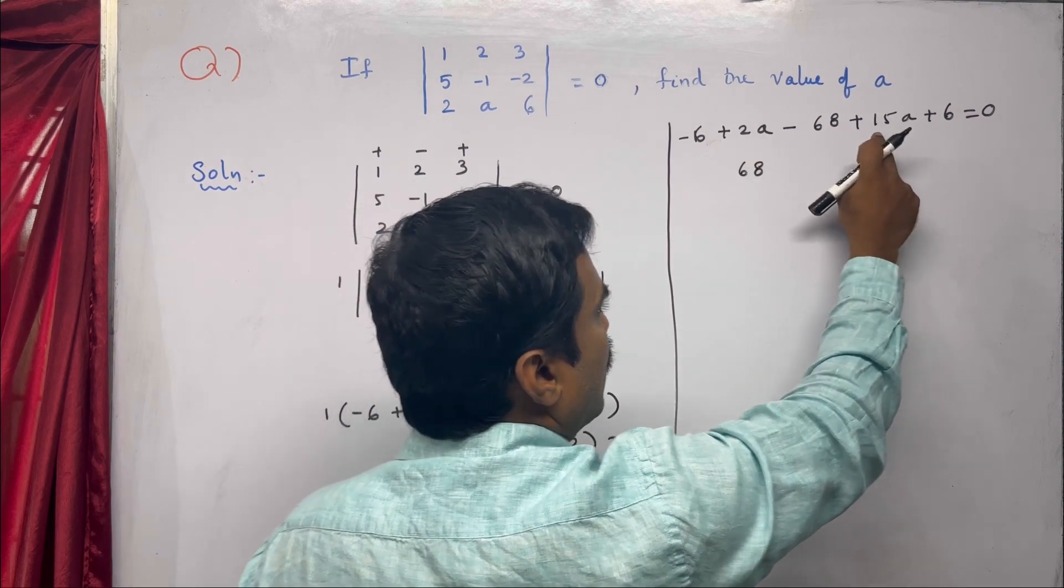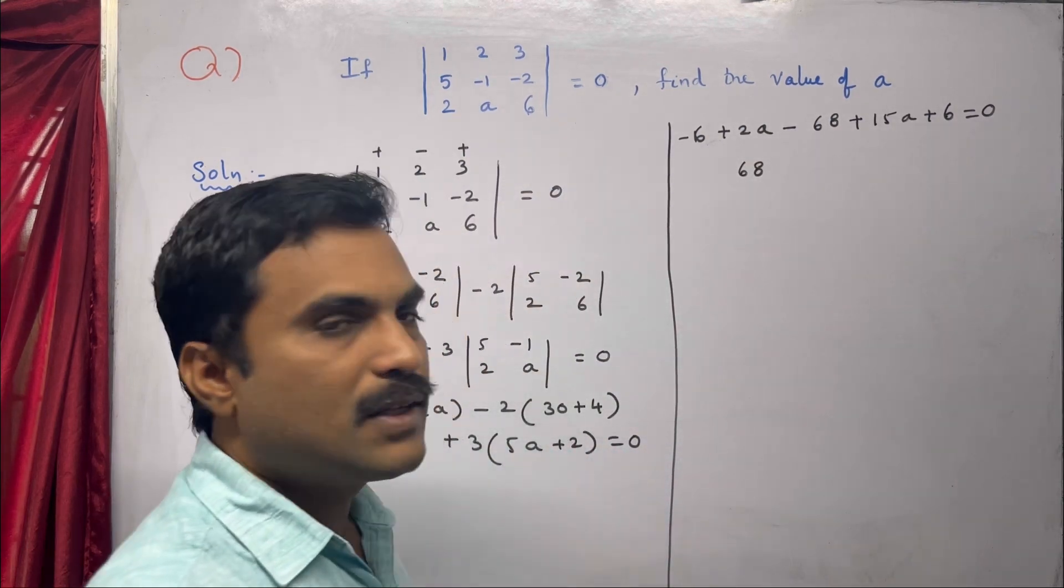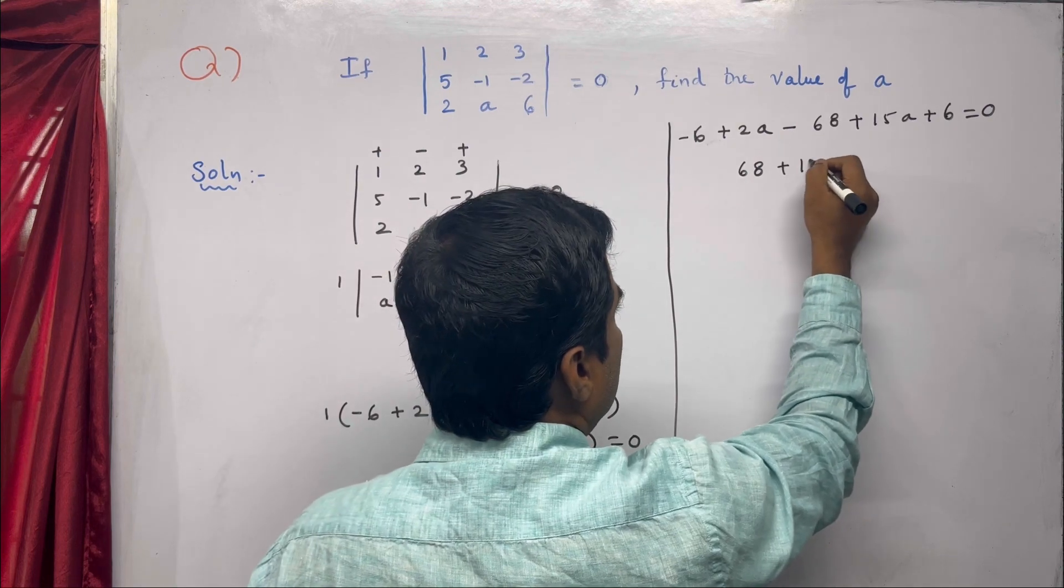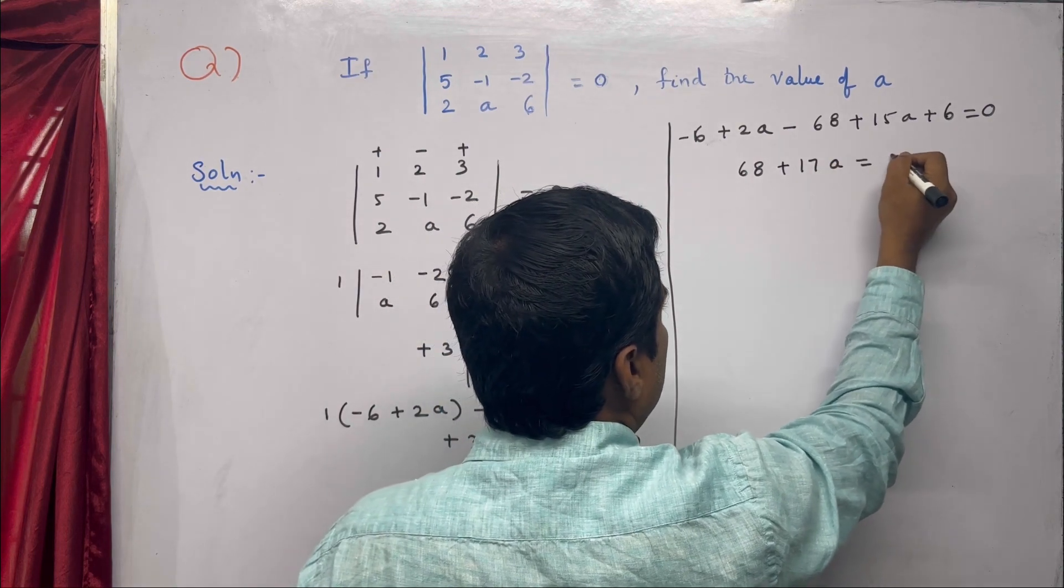Now for the terms with a: we have 2a and 15a, which combine to give 17a. So we have -68 + 17a = 0.